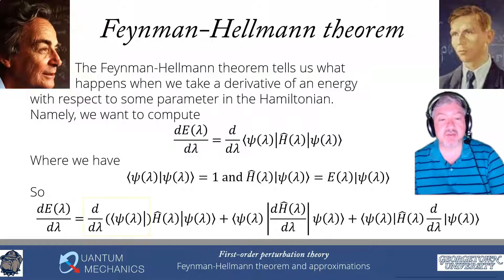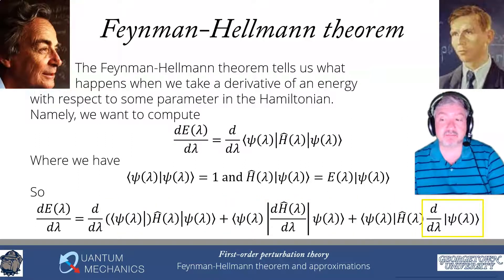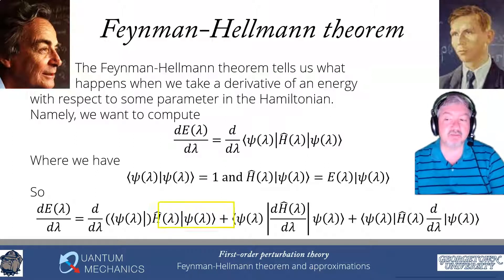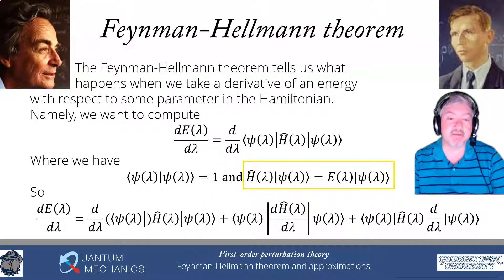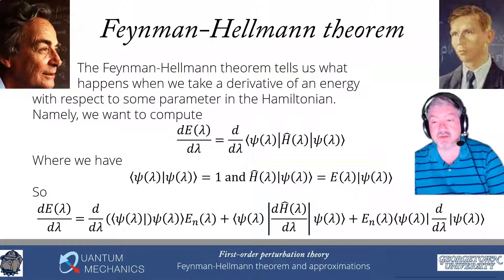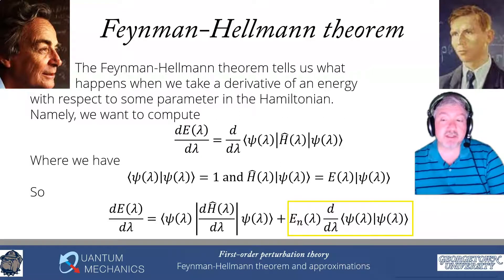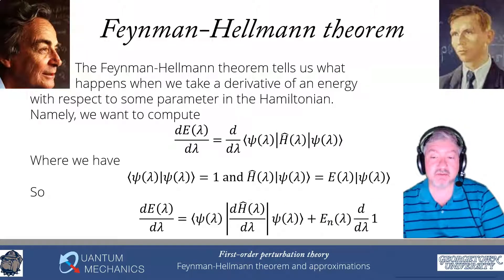Using the chain rule, we get three terms: the derivative of the bra, the derivative of the Hamiltonian, and the derivative of the ket. In the derivative-of-the-bra term, H acts on psi, so we use the eigenvalue relation to replace that with E(lambda) times psi. E(lambda) is a number we can pull out, leaving a derivative of the bra times the ket. The same happens with the derivative-of-the-ket term. Factoring out E(lambda) times those two terms, we get the derivative of the bracket psi(lambda) psi(lambda). But that equals one because psi is normalized, and the derivative of a constant is zero, so that term vanishes.